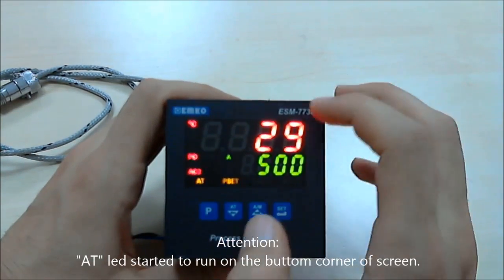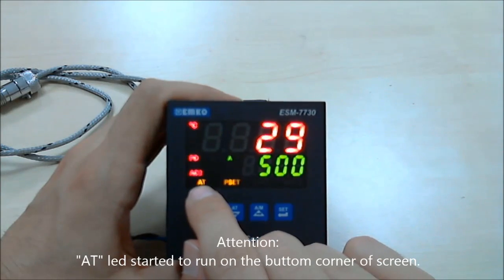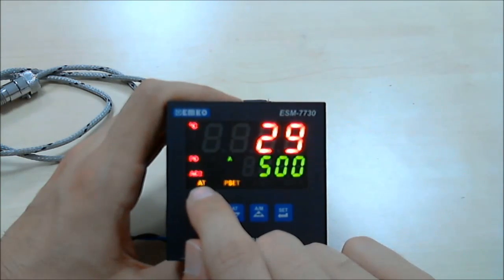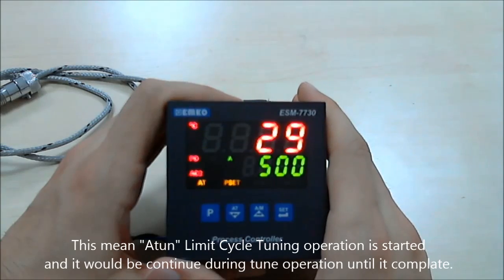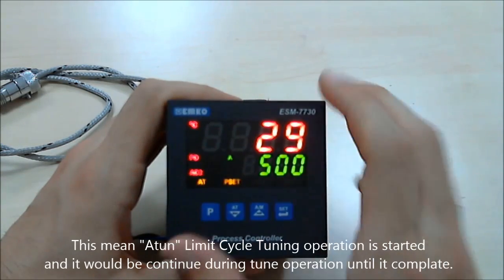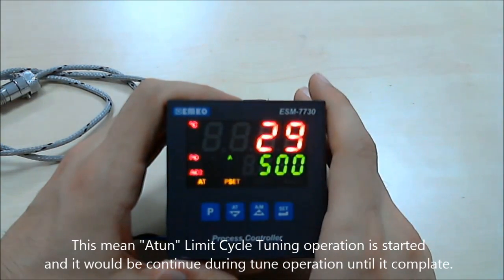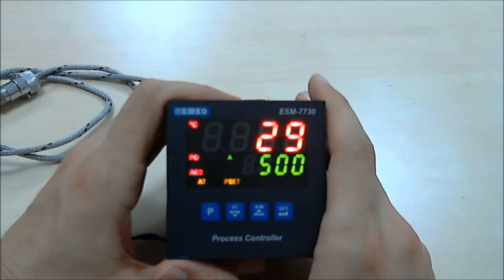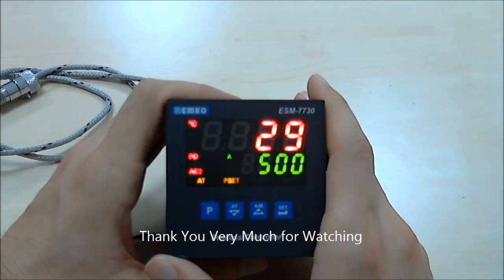As you see on the main screen there is AT-LED is running. This means auto-tuning operation is started. The LED will be run during the tuning operation until it be finished. Thank you very much.